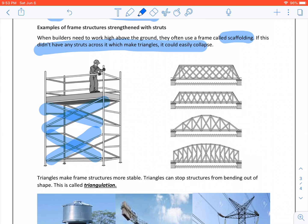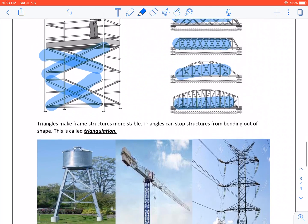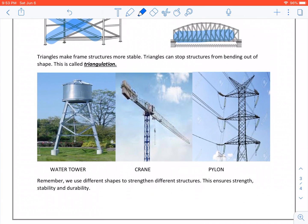Look at the bridges. All have triangles to strengthen the structure. Triangles make frame structures more stable. Triangles can stop structures from bending out of shape. This is called triangulation.